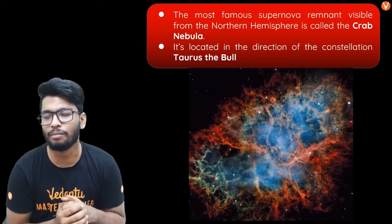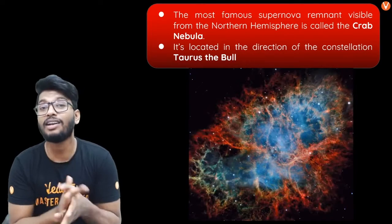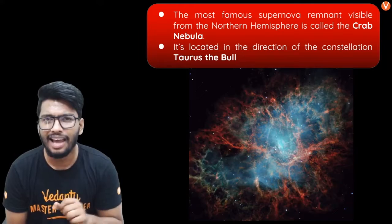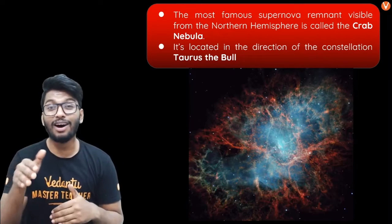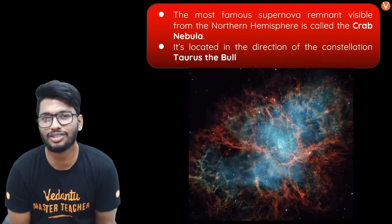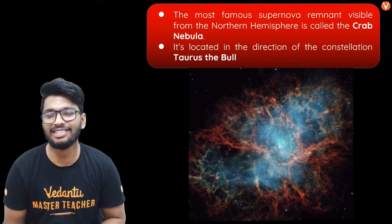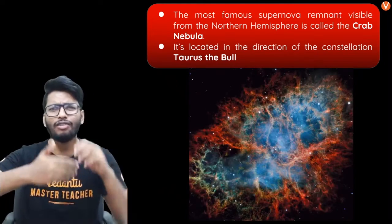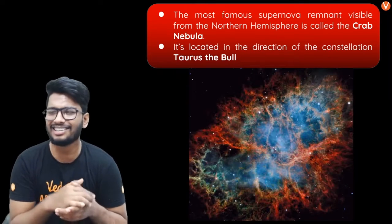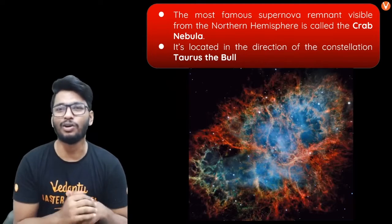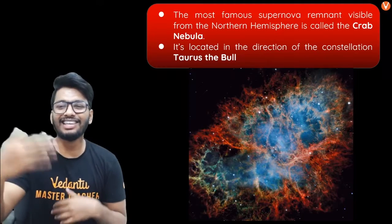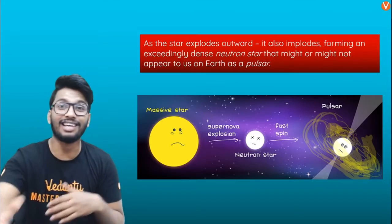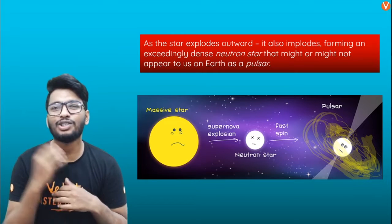However, there is one very famous supernova — it is called the Crab Nebula. It is located near Taurus, the bull constellation. This is one of the most beautiful sights ever captured, and in fact a lot of sci-fi movies like Star Trek feature these kinds of pictures. If you watch sci-fi movies, you'll notice all these beautiful images of space, which show just how beautiful our universe is.